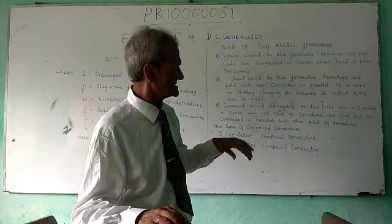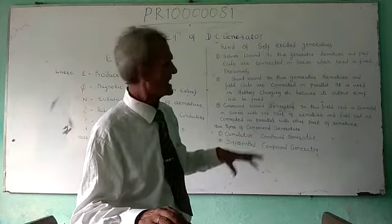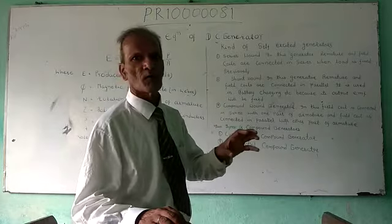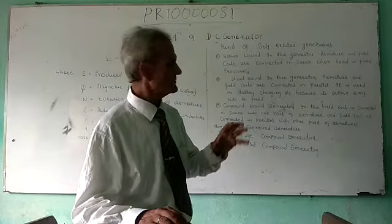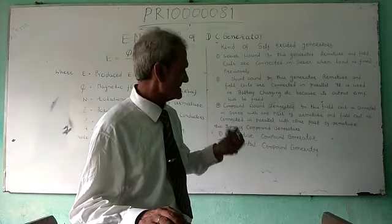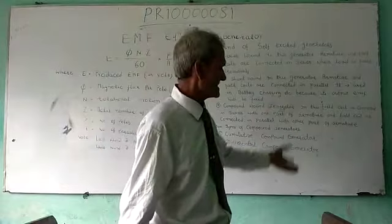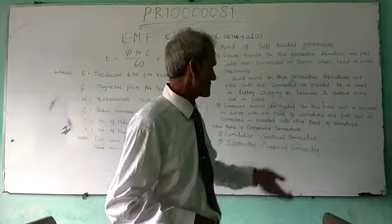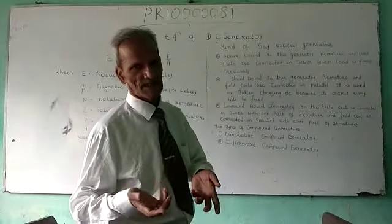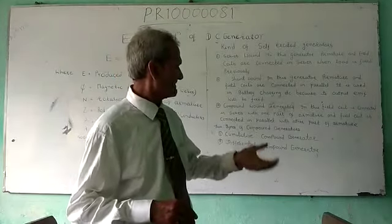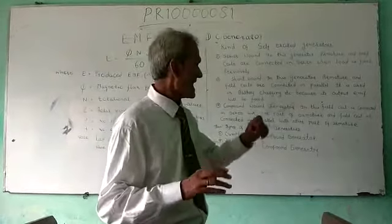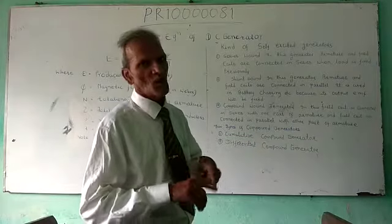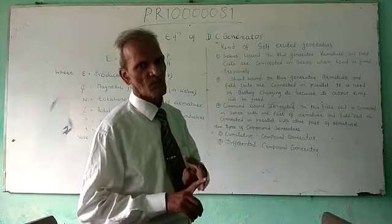The compound-wound generator has the armature part in parallel connection with one field winding, and the other part will be connected in series.